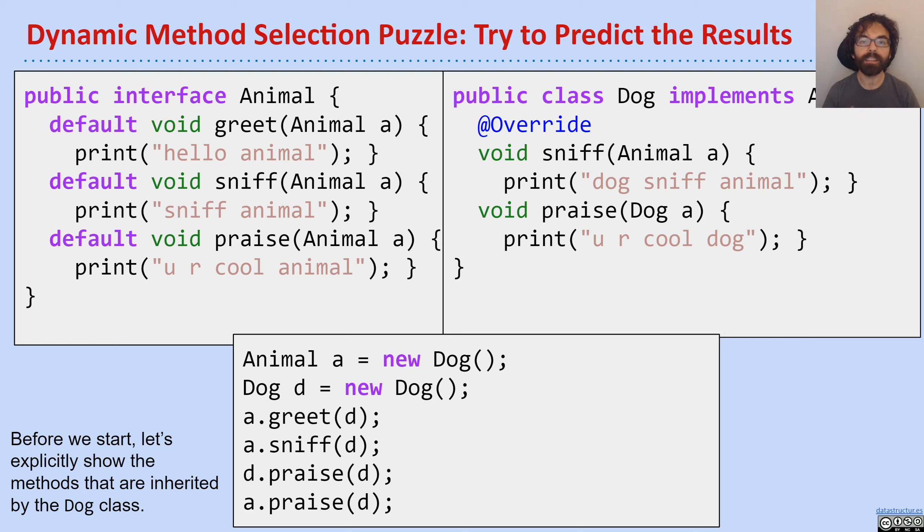So to really set the stage, I have a puzzle for you here. And I want you to spend a few minutes, ideally, just trying to come up with an answer to each of these four calls down here. So let me explain what's going on. On the left, I have this interface Animal, which has three methods: greet, sniff, and praise.